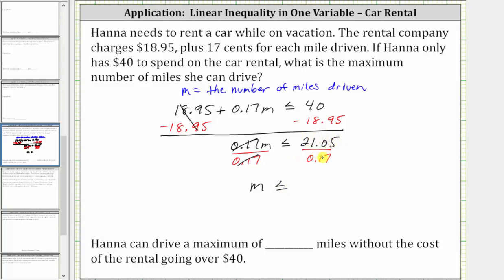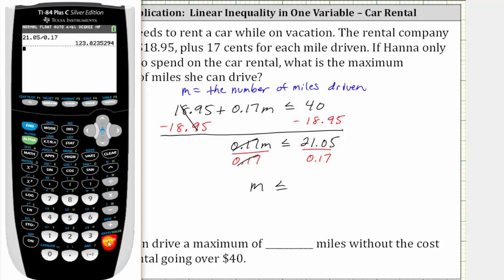And let's find this quotient on the calculator. We need to be careful interpreting this though. Remember m is the number of miles driven. Assuming Hannah cannot drive a fraction or decimal part of a mile, we would not round this up to 124. Because if we did, then the cost would be more than $40. And therefore we're going to round down to 123.